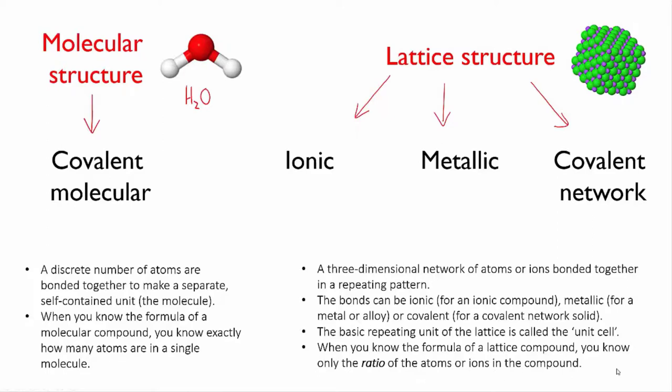So the point of all this is to distinguish between compounds that are formed of individual molecules and compounds that form lattices. With ionic or metallic substances, you know already that they form lattices. So that's easy. With covalent compounds, it's a bit trickier. They could be either. However...